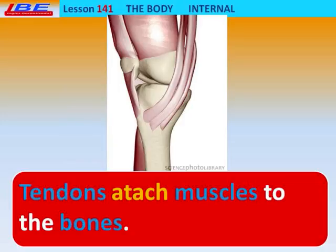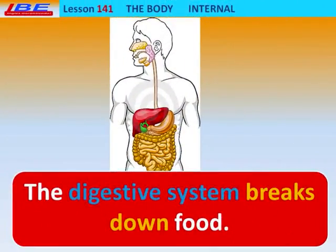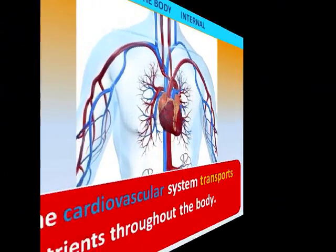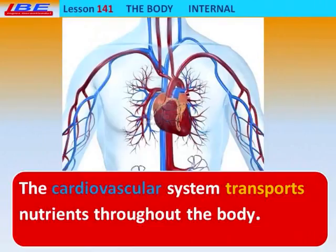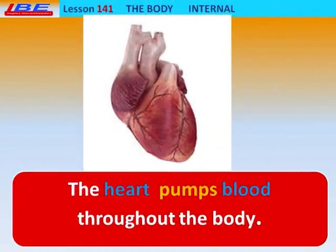Bones provide structure for muscles to attach. Tendons attach muscles to the bones. We use our muscles to propel motion. The digestive system breaks down food. The intestines absorb nutrients and separate liquid.